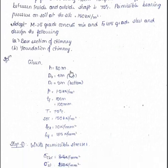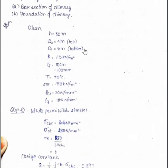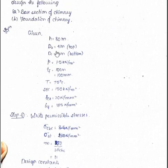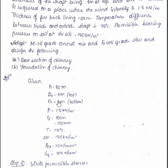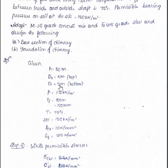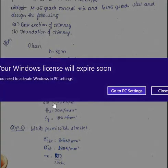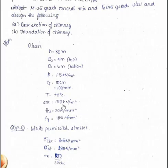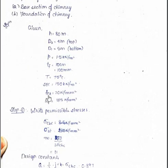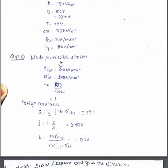In the solution, first I have written what is given. H is the height of the chimney — 80 meters. Outer diameter at the top is 4 meters, outer diameter at the bottom is 5 meters. P is the pressure intensity — 1.5 kilo Newton per meter square. Tf is the thickness of fire brick lining — 100 mm. Capital T is 75 degrees centigrade, that is the temperature difference. SBC is soil bearing capacity — 150 kilo Newton per meter square. Fck is 20 Newton per mm square and Fy is 415 Newton per mm square.